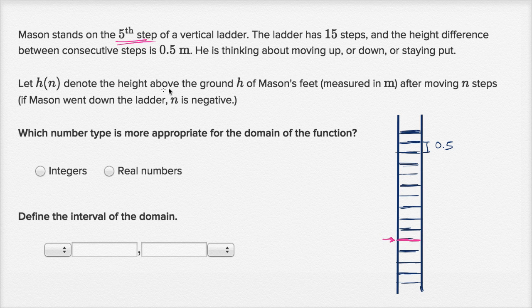Let h(n) denote the height above the ground h of Mason's feet measured in meters after moving n steps. If Mason went down the ladder, n is negative. All right, h(n), so the height above the ground after moving n steps. So let's just make sure we understand this. If I were to say h(0), what is that going to be? Well, h(0) means that he's moved zero steps.